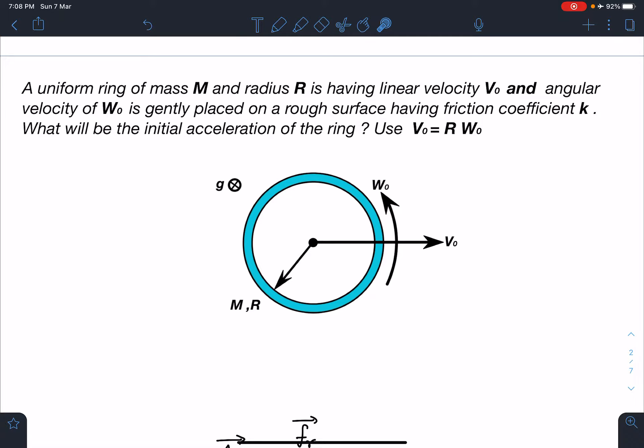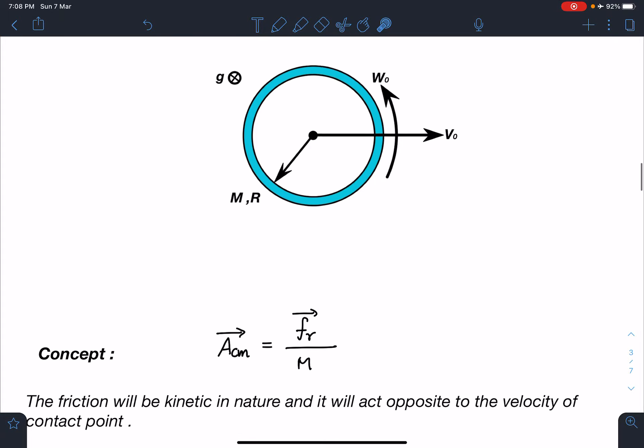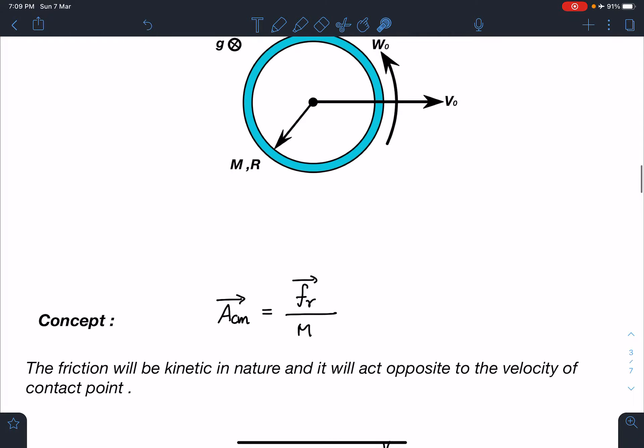Let's discuss the concept. Acceleration of center of mass can be given by friction force. If we can find friction for this ring, then we can find out the acceleration of center of mass. The friction will be kinetic in nature because each and every particle is having some nonzero velocity. The friction force will be acting opposite to the velocity of contact point.